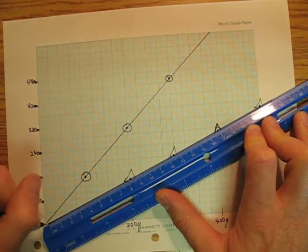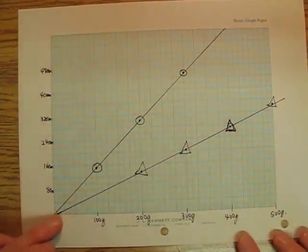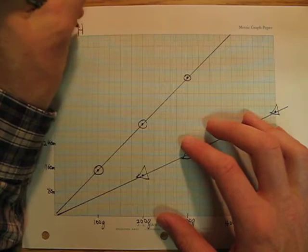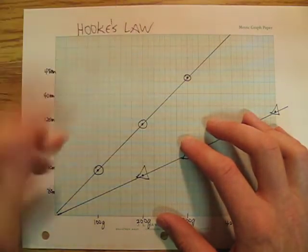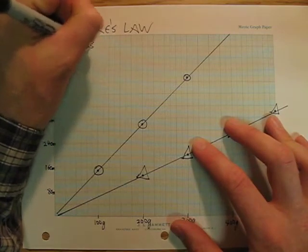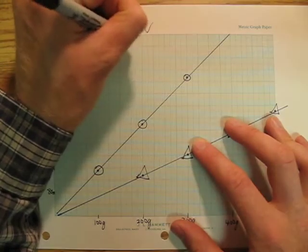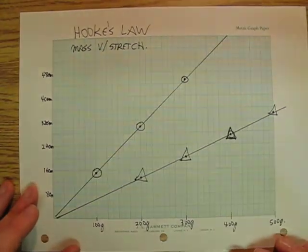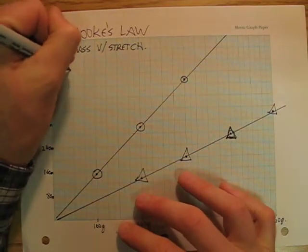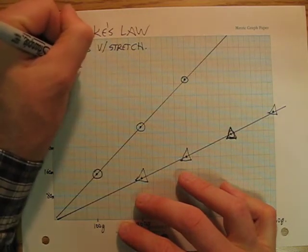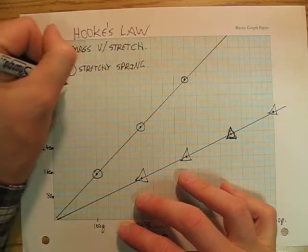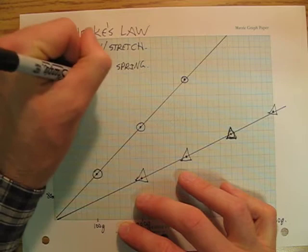Once again that line goes more or less back to zero. Now I need a title for my graph — the title is going to be Hooke's Law, mass versus stretch. I'm going to make a little key: that is the stretchy spring, and this is the stiff spring.